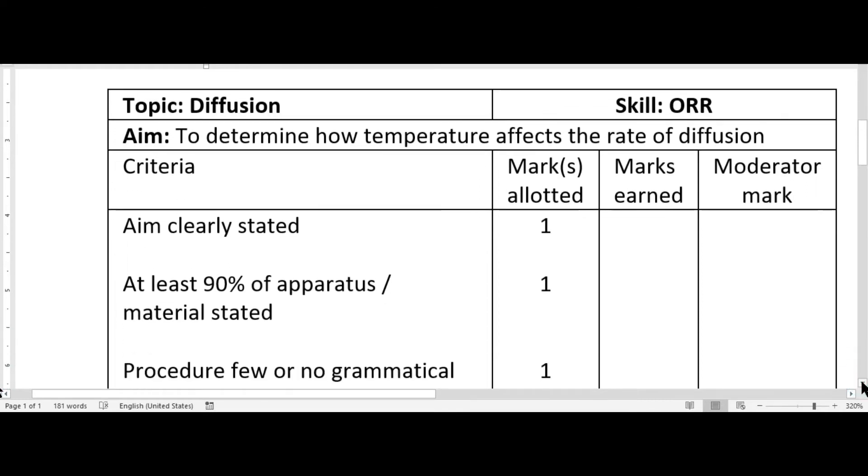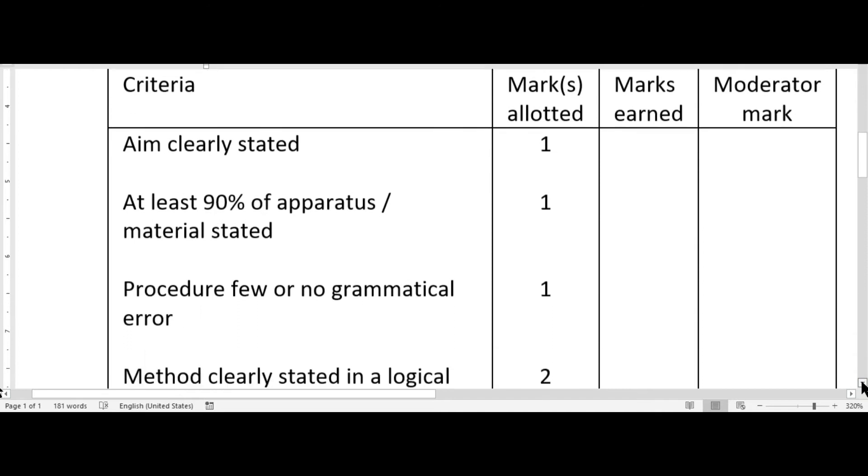You should have at least 90 percent of the apparatus and materials stated. Ideally we want to have all material and apparatus stated but this is a very early part of the syllabus so having at least 90 percent of that stated would be ideal and you're going to be given one mark for that if you have that in your book.